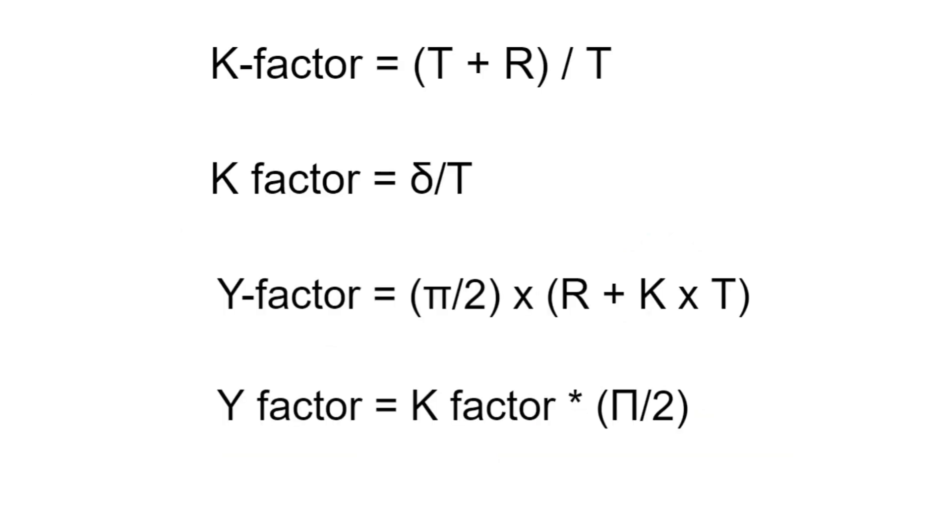Let's see how to calculate the K-factor and Y-factor. K-factor can be calculated with this formula: delta plus R divided by T, where T is the thickness of the material and R is the inside bend radius. Y-factor can be calculated as pi divided by 2 times K-factor, or pi by 2 times R plus KT. These are the two formulas to calculate the K-factor and Y-factor.